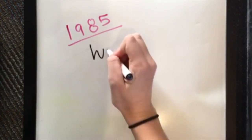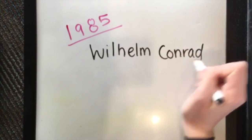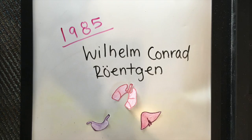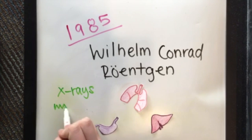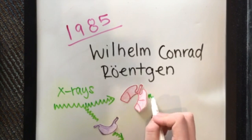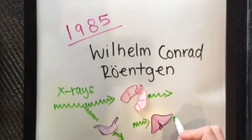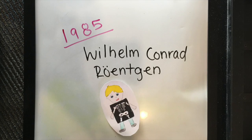In 1985, a scientist by the name of Wilhelm Conrad Runchen discovered that x-rays could penetrate soft tissues and organs but not bone, and that they could produce shadow images of bones. This is why now we use x-rays to see if we have a broken bone or not.